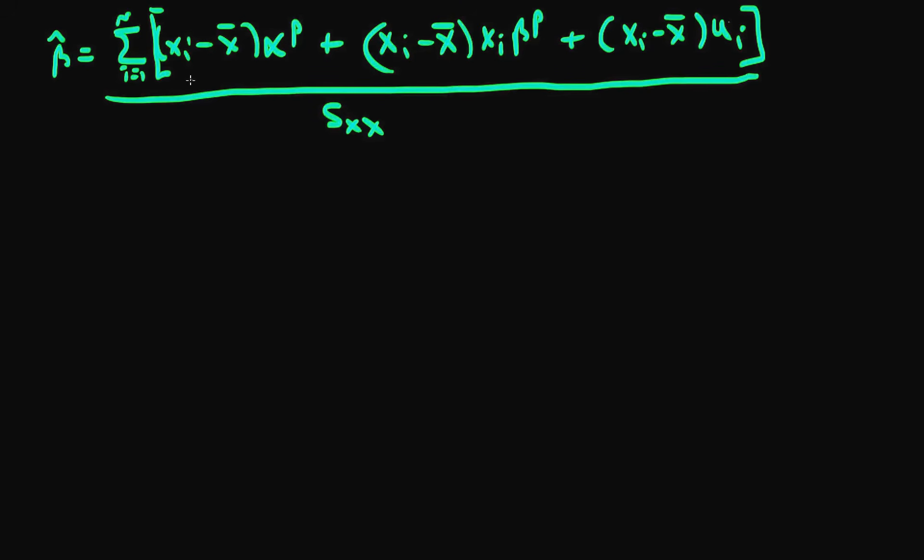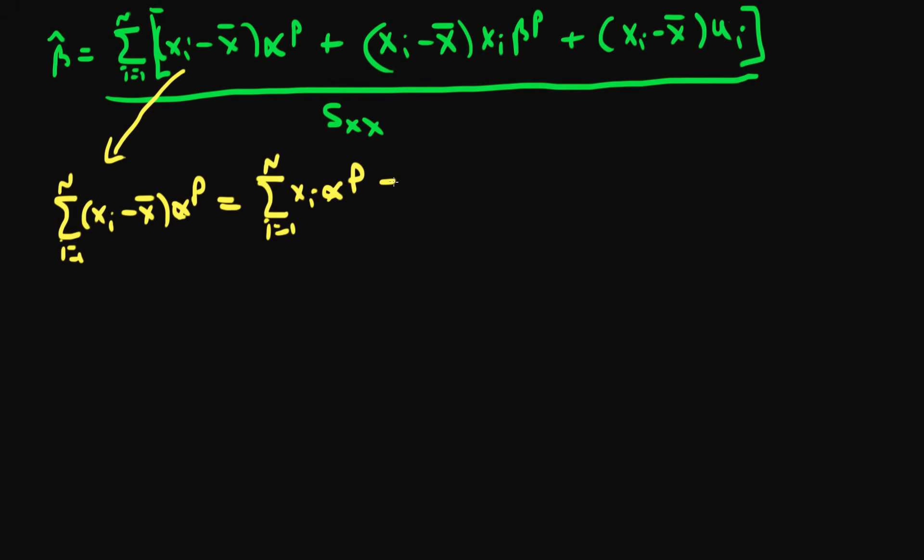So this first term here, the term with alpha in it, we can write out as that being equal to the sum of i equals 1 to n of xi minus x-bar times alpha p, which is equal to, if I multiply out this parenthesis, that's equal to the sum of i equals 1 to n of xi alpha p, and minus x-bar alpha p times the sum of 1 from i equals 1 to n. Where in the second term here, I have used the fact that neither alpha p nor x-bar have any summation indices, so I can in fact just take them outside of the summation.